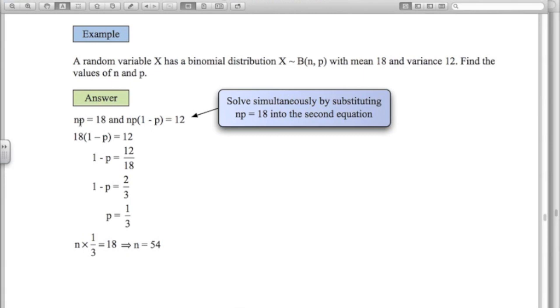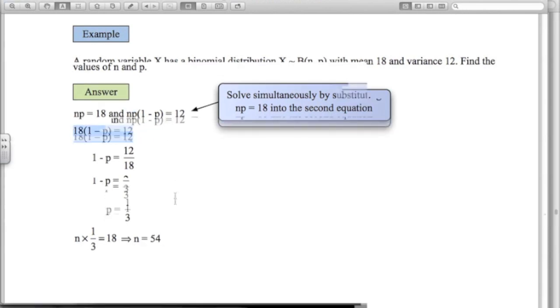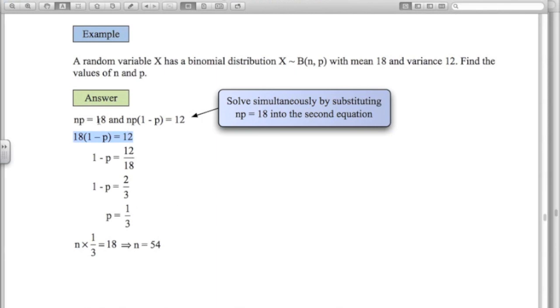Easiest way to do this is substitute this value np = 18 into this equation here. So we have np in the second equation, replace that with 18 which gives us this equation here. Hopefully you can see how I did that. I've just substituted in the value of 18 for np in the second equation.